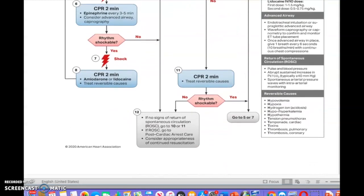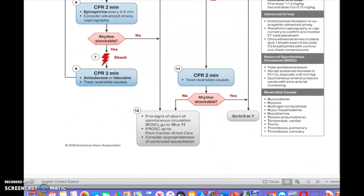To treat reversible causes. What are the reversible causes they're talking about? We have to consider the reversible causes, the five H's and the five T's. Hypovolemia, that's reversible, right? Because how do we reverse hypovolemia? Hypovolemia is when you have fluid deficit volume or blood deficit volume. If you did the blood pressure, the blood pressure is 70 over 80, definitely this can be reversible by administering IV fluids.